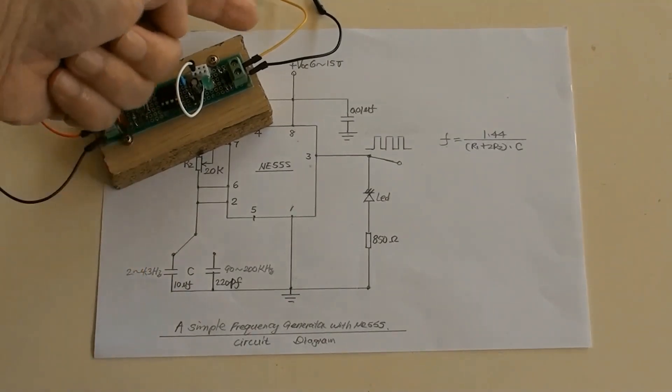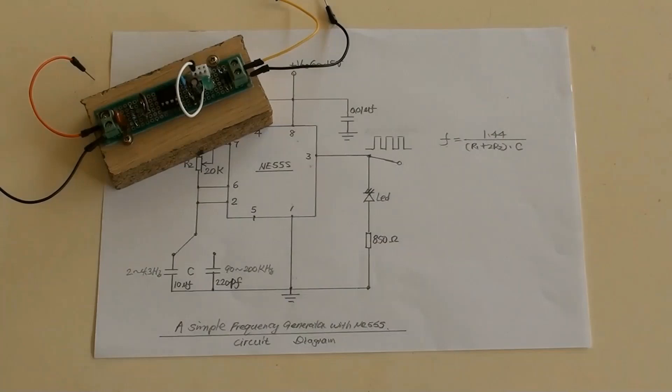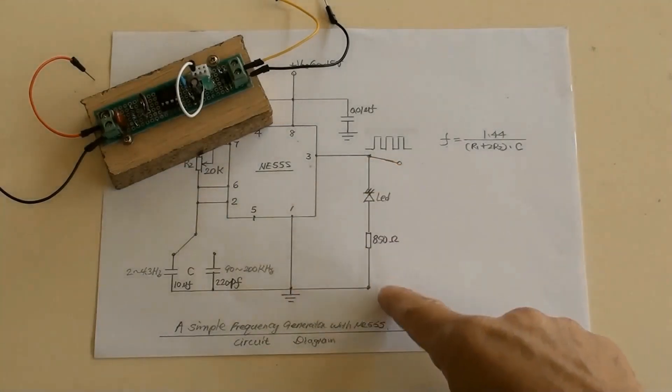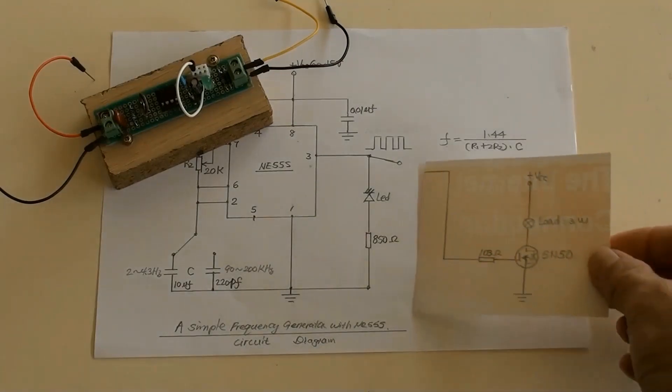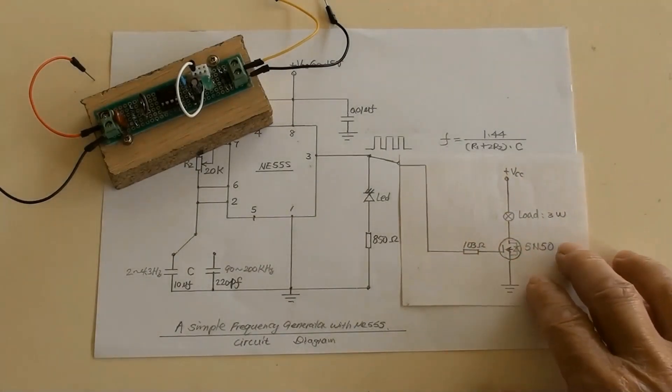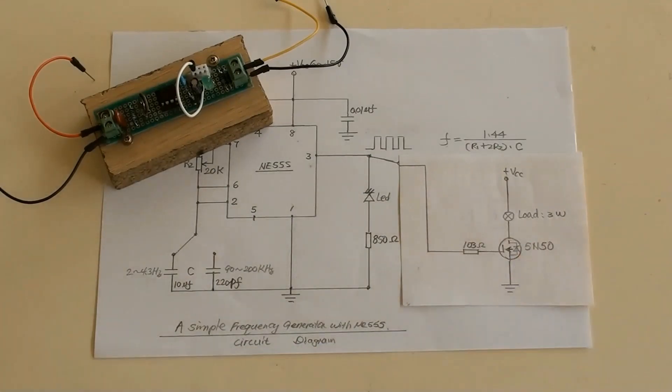The NE555 maximum output current is 200mA. It is okay for this LED circuit as a load. However, if a larger load is required, it will need to add a larger capacity circuit, such as the circuit with a MOSFET associated like this.